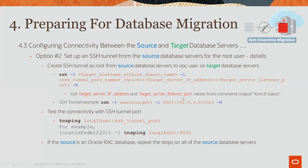After you have set up the tunnel, you would use TNS ping localhost colon tunnel port — and again, that tunnel port we are using here is 9001. If the source is a RAC database, then you need to repeat these steps on all the source database servers. Thanks for joining us.